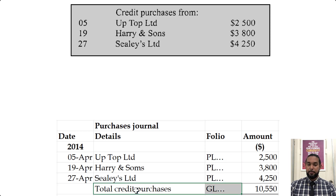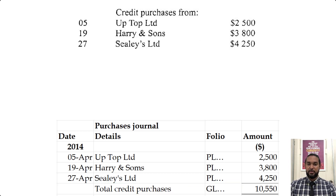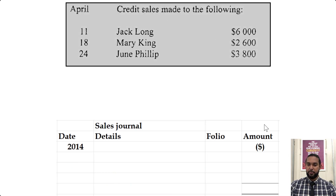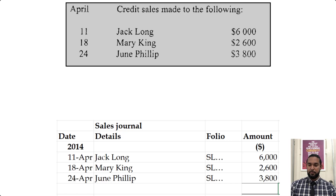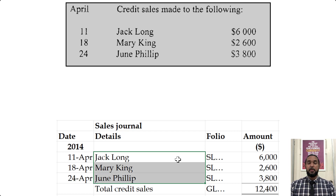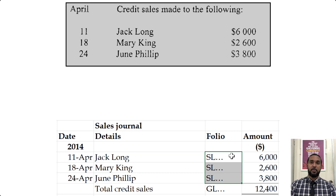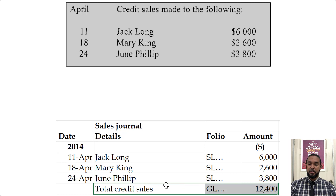For the sales journal, we record credit sales to Jack Long, Mary King, and June Phillips with date, details, folio, and amount. When we make credit sales, customers owe us money — they are trade debtors and their accounts are in the sales ledger, shown as SL with a page number. You can use any numbers you like. The total credit sales for the month are transferred to the sales account in the general ledger, shown as GL.